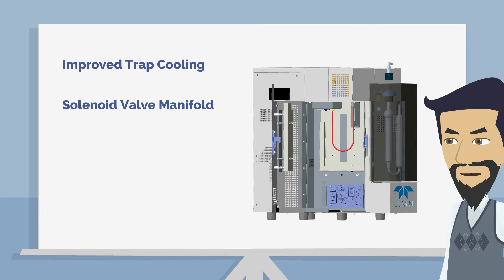The Lumen is also equipped with a solenoid valve manifold that brings all of the solenoid valves into one location on the front of the instrument. This makes benchmark testing, diagnostic tasks, and other maintenance tasks simpler.